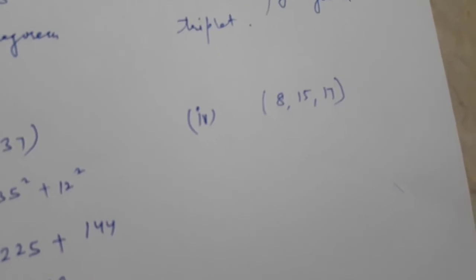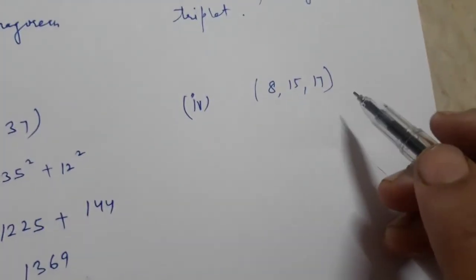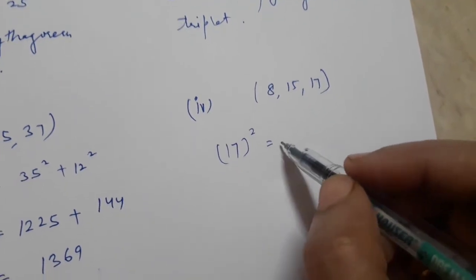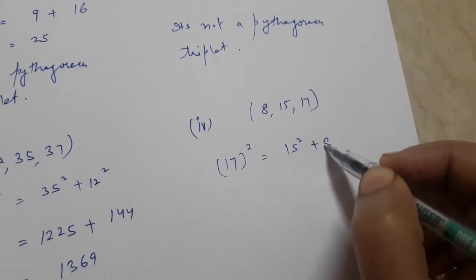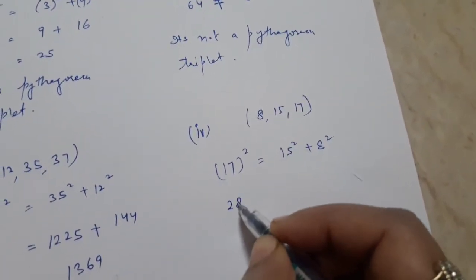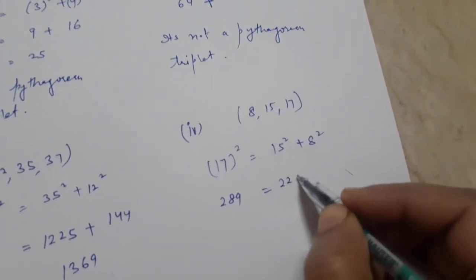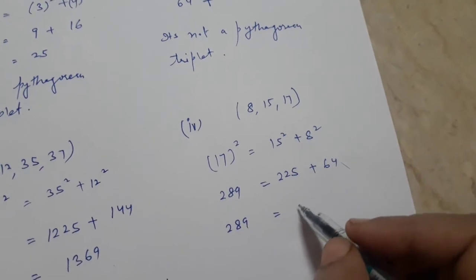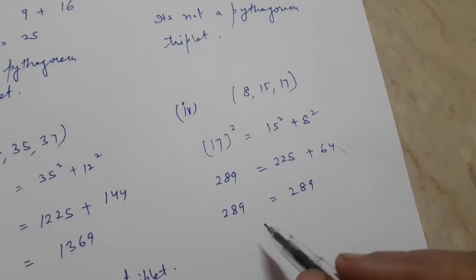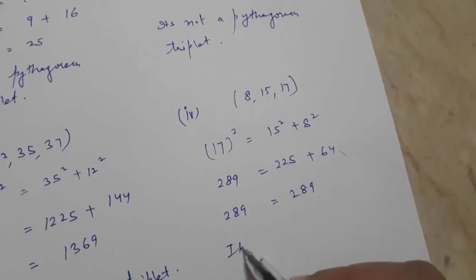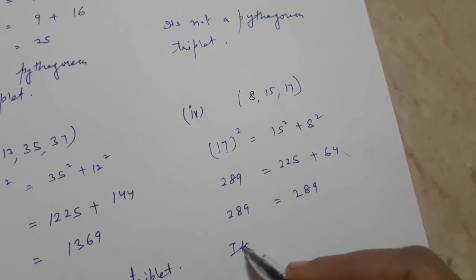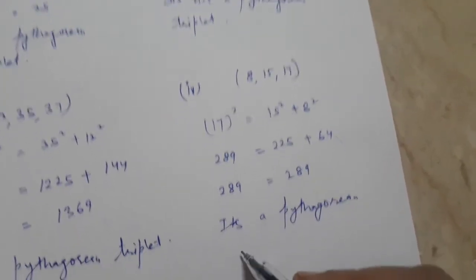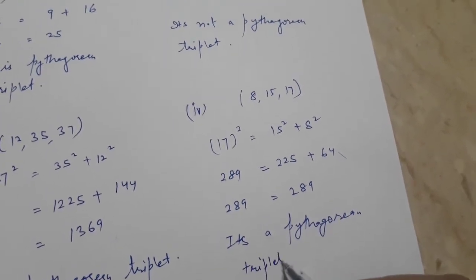In the fourth option, the three natural numbers given are 17, 15, and 8. We check whether 17² equals 15² + 8². 17² = 289, 15² = 225, and 8² = 64. 225 + 64 = 289. Since LHS equals RHS, we can say it's also a Pythagorean triplet, where x² + y² = z².